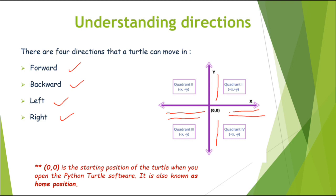Similarly, when we move upwards y increases and when we move downwards y decreases. On the basis of this there are four areas referred to as quadrants. Quadrant one has plus x and plus y. If you move where x is decreasing but y is increasing, that is another quadrant. The zero zero position is the starting position of the turtle, also referred to as the home position.